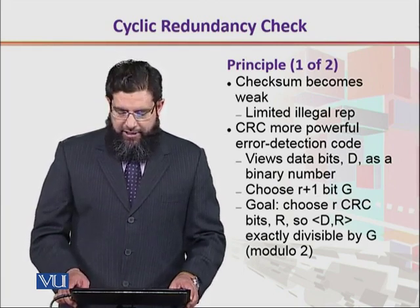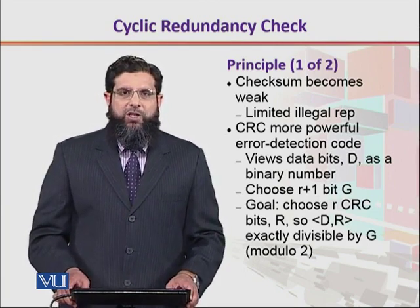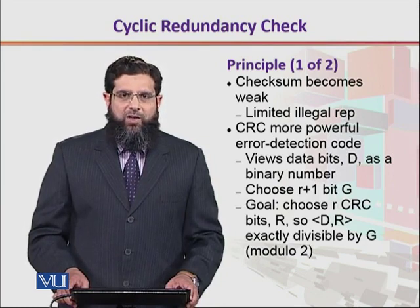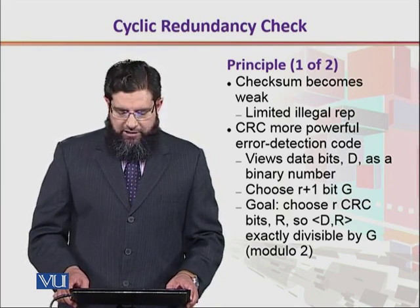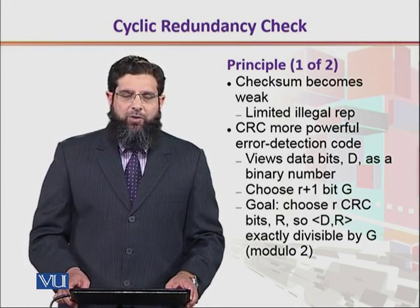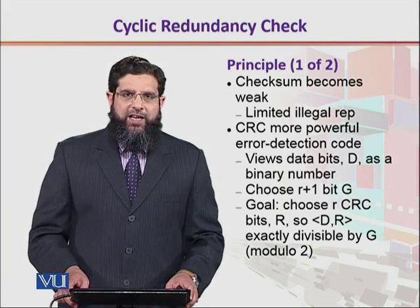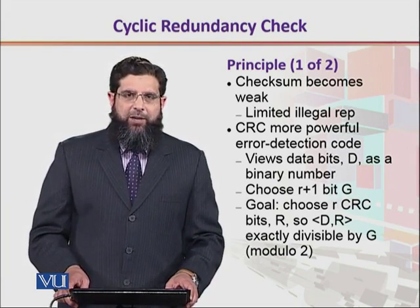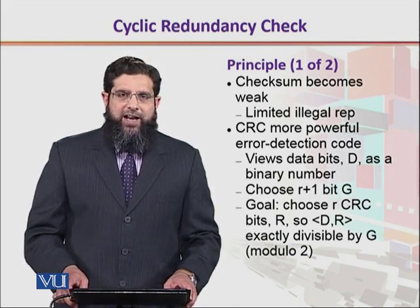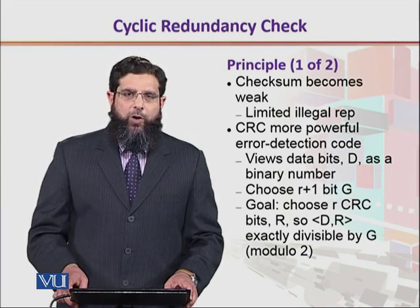CRC takes d bits of data and starts a division process with something called a generator polynomial. The generator is r plus 1 bits, where r is going to be the remainder. For example, if we take g as the divisor and d as the data bits which are to be divided, then the remainder has to be at least 1 bit less than g.